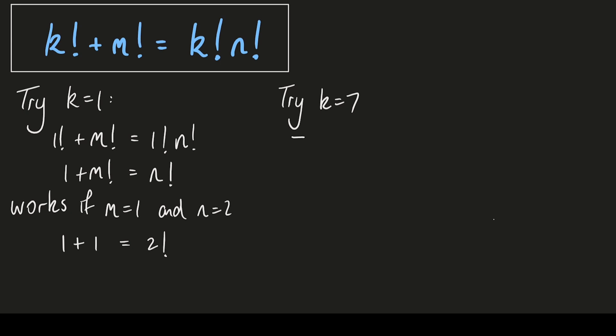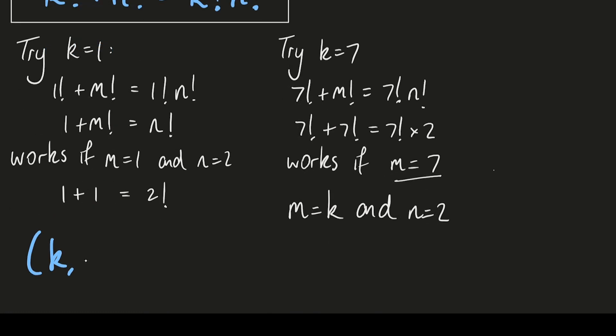I mean if k equals 7, so we have 7 factorial plus m factorial is equal to 7 factorial times n factorial. Well if m were 7 as well then 7 factorial plus 7 factorial is just double 7 factorial. It's always going to work because 2 factorial is just equal to 2. So as long as m is equal to k and n is equal to 2, we'll always have a solution. That's going to give an infinite set of solutions which we can express like this.